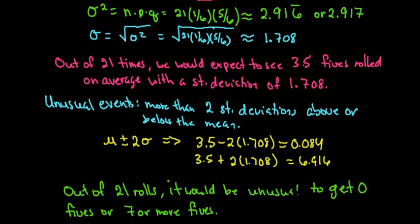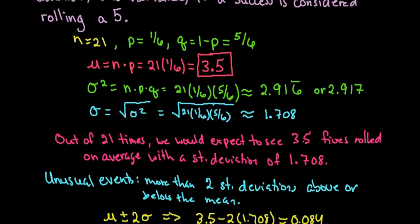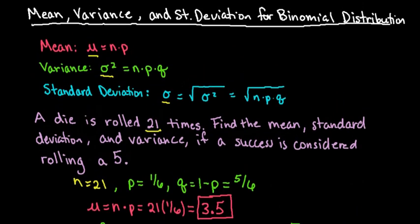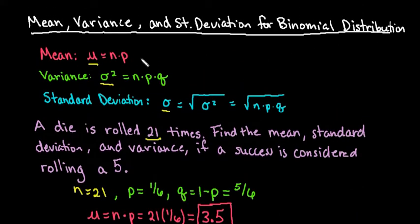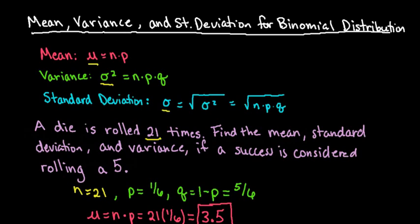As a recap: to find the mean of a binomial distribution — this only works for binomial distributions — you take the number of trials times the probability of success. The variance is the number of trials times the probability of success times the probability of failure. And the standard deviation is just the square root of the variance. Thanks for watching — please check out all of my other video content, and if you have any suggestions, please let me know.